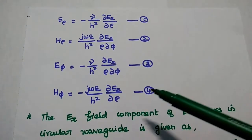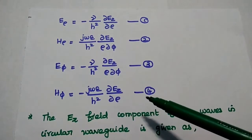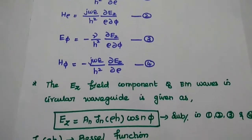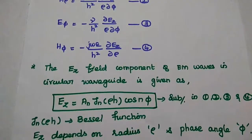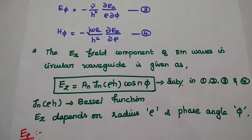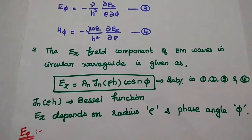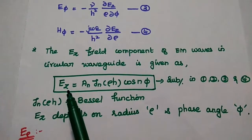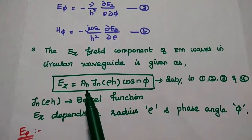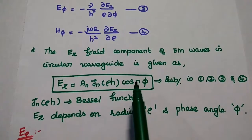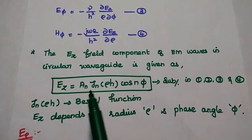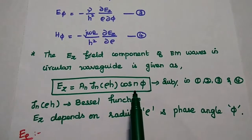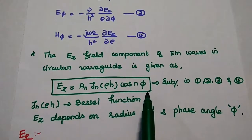In the next step, we are going to substitute the value of EZ. Here we have already derived the value of the EZ field component of electromagnetic waves in circular wave guide using Bessel's function. The EZ value is equal to AN JN of rho H cos N phi. Here JN of rho H is the Bessel's function and N is any root value or integer.